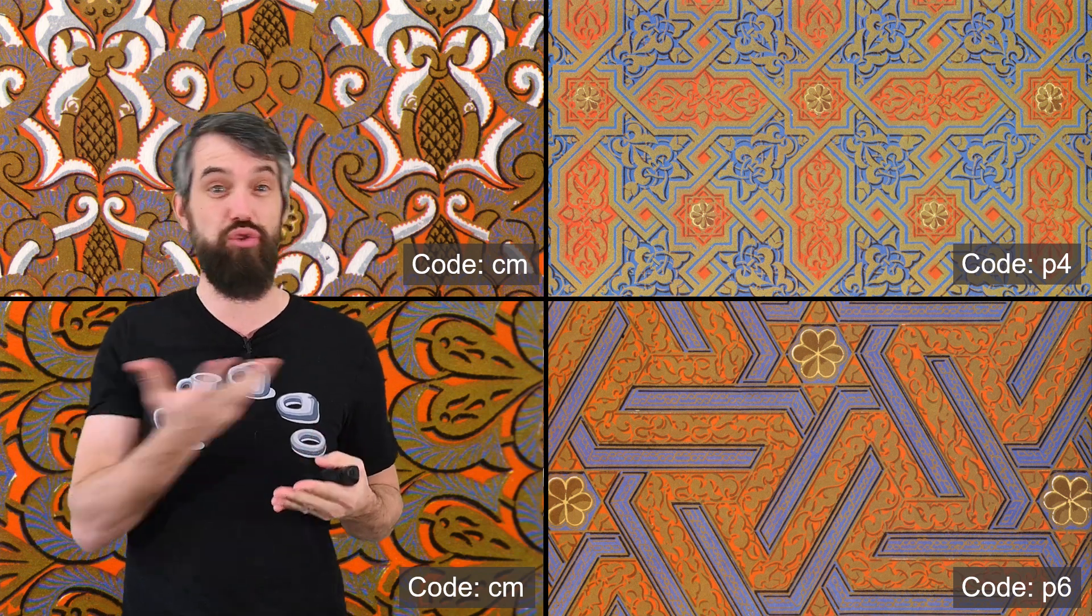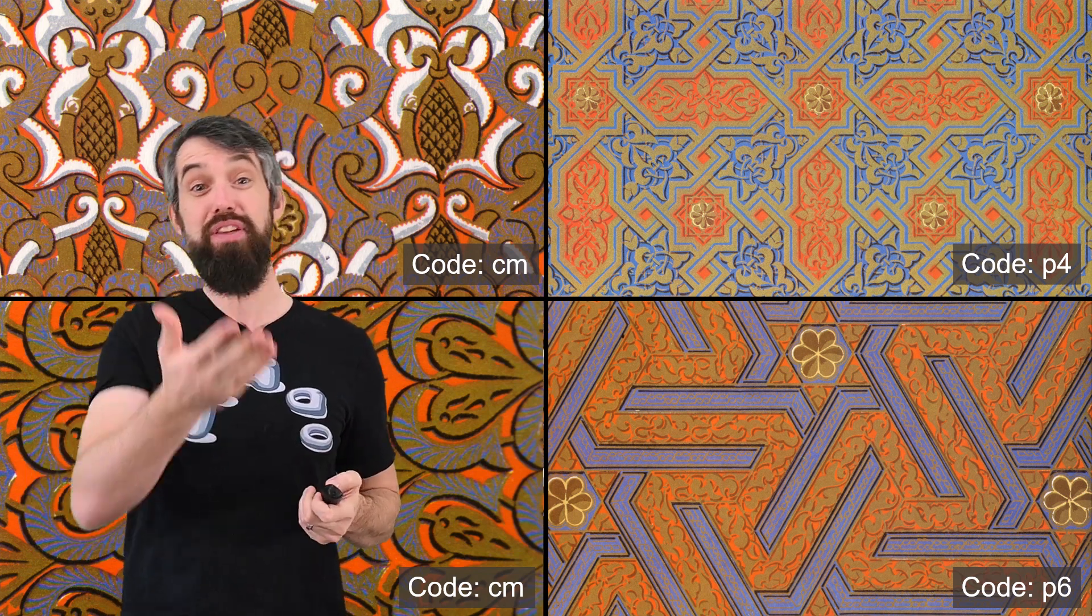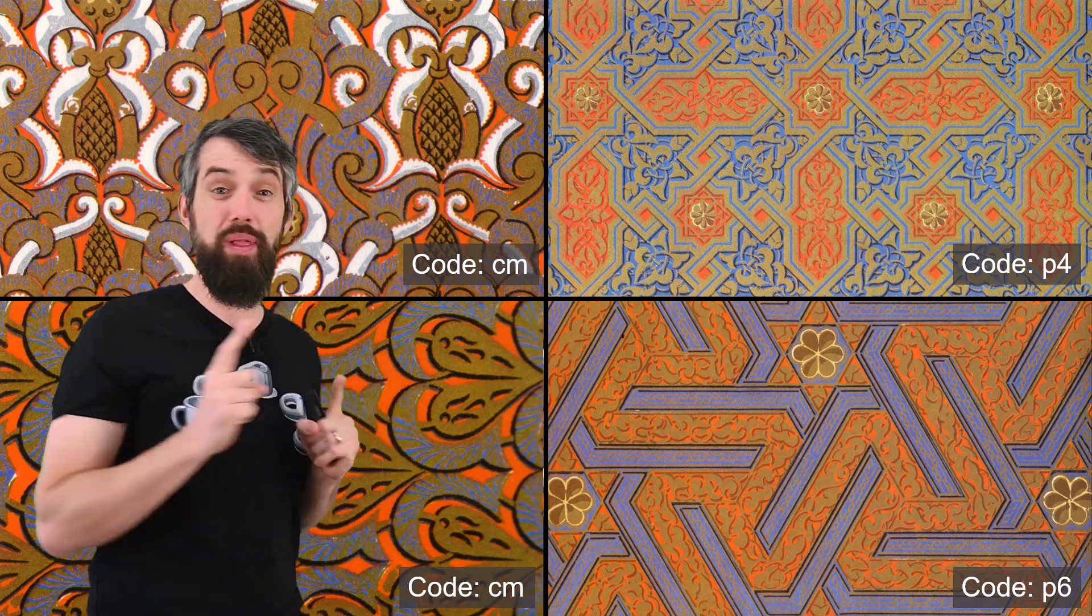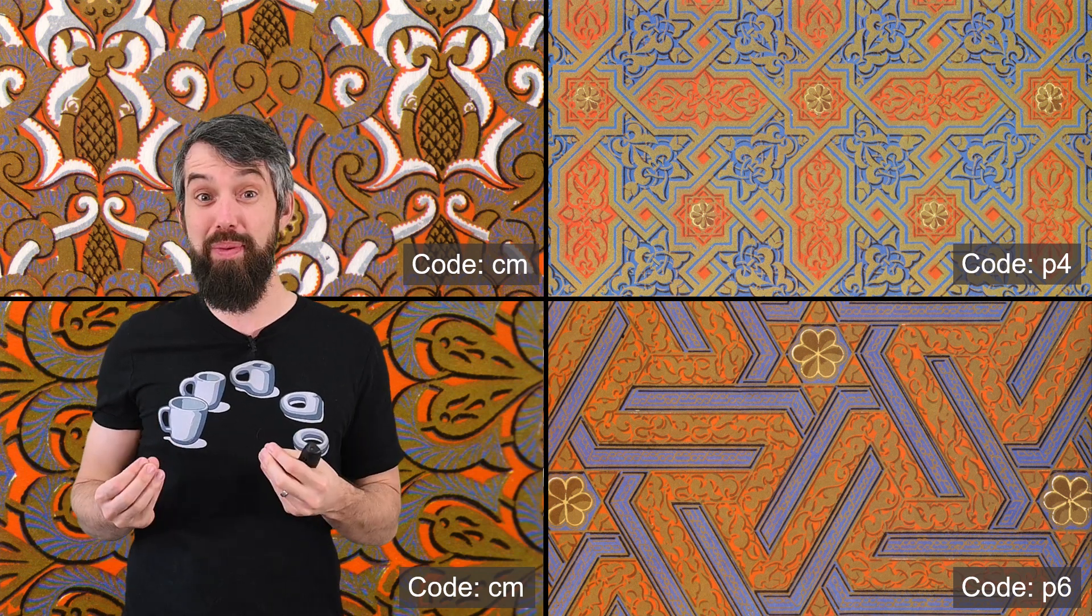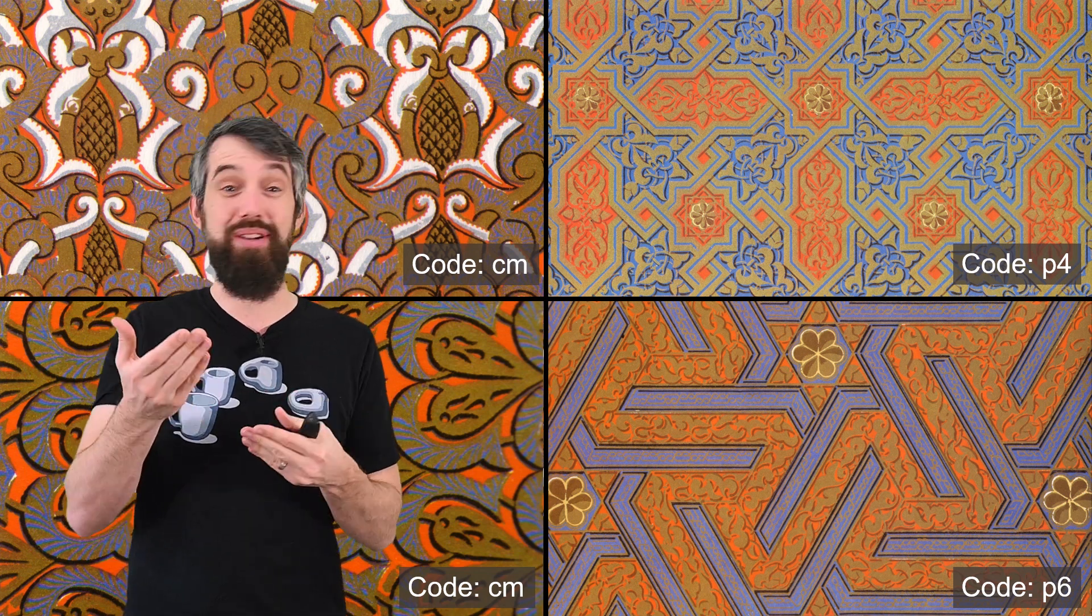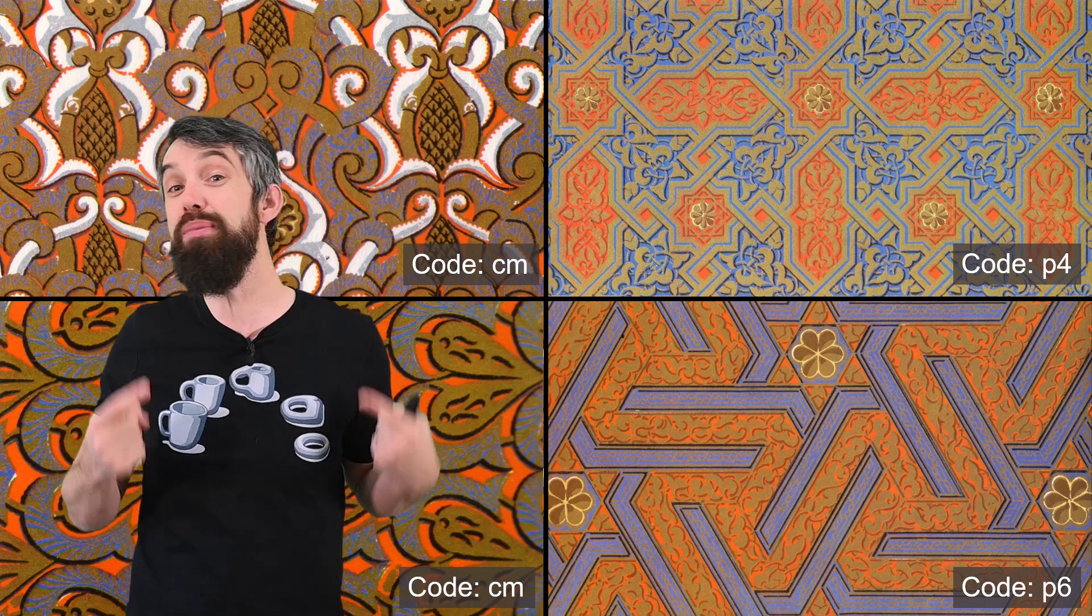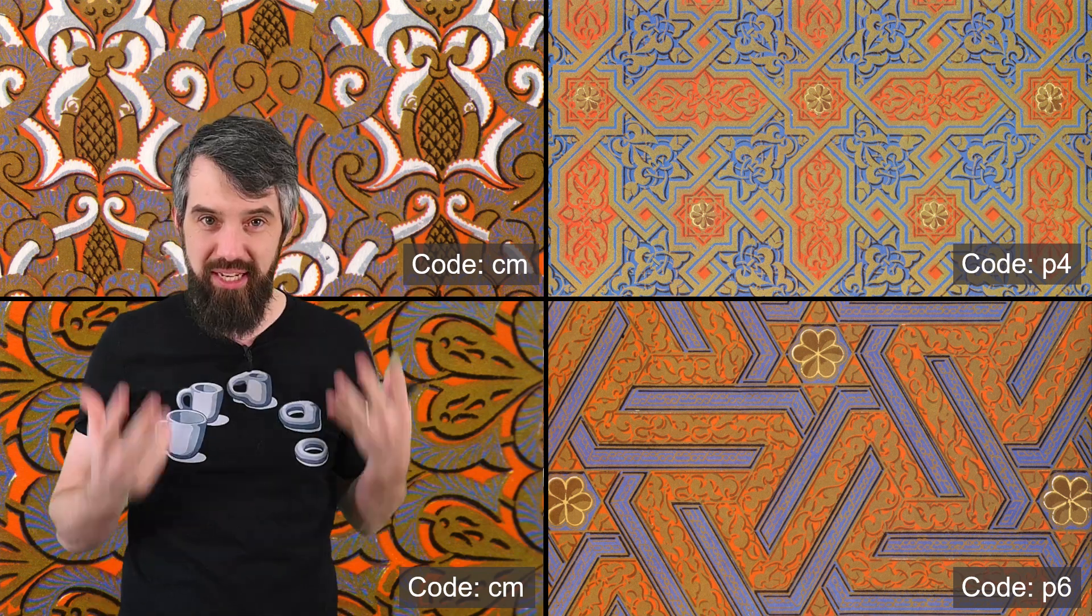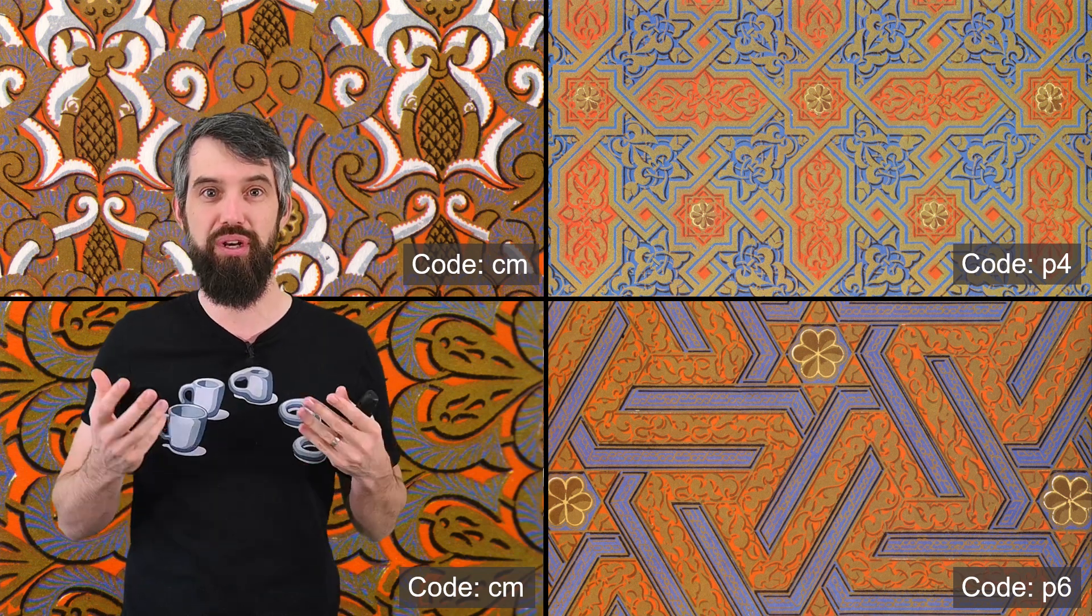Reflections, rotations, translations. And each of these different wallpapers is given a different code. The two on the left here have the exact same code. And this is going to be because even though they have different artistic stylings, the symmetries that they have are exactly the same. The ones on the right are different types of symmetries, and they get different codes.